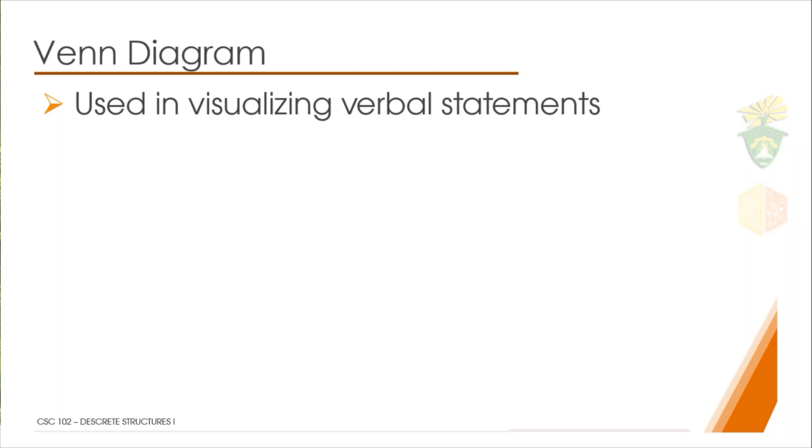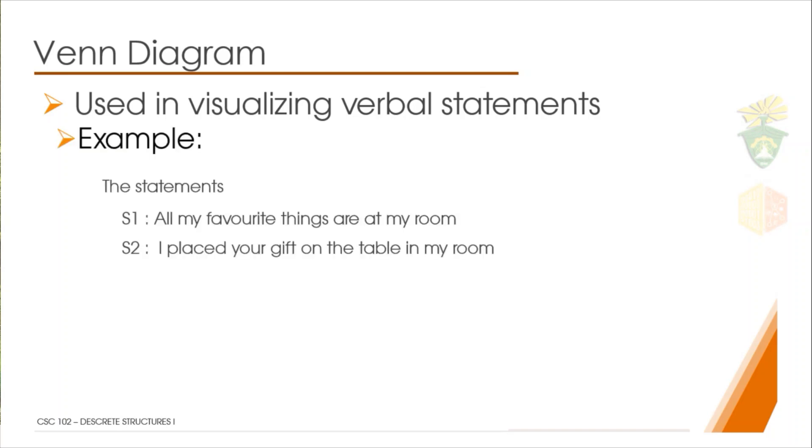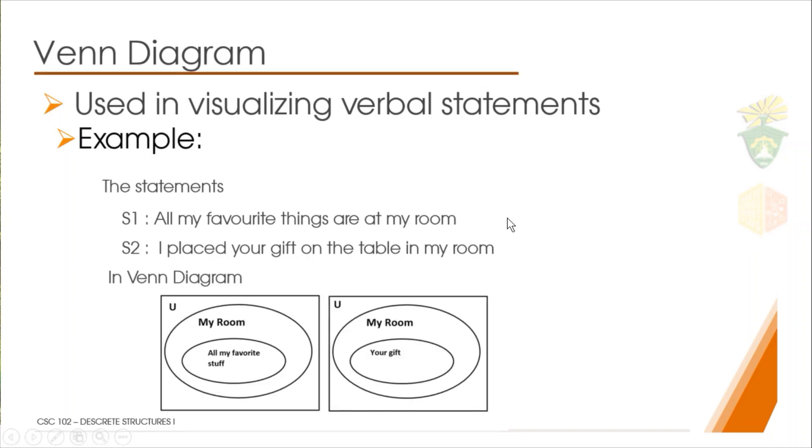Now you could use a Venn diagram in visualizing verbal statements. This is very useful as we continue on our topics. For example, you have two statements: all my favorite things are at my room, and statement two says I placed your gift on the table in my room. What can you conclude from these two statements? Maybe we could use a Venn diagram.